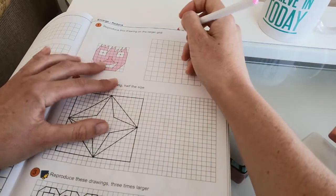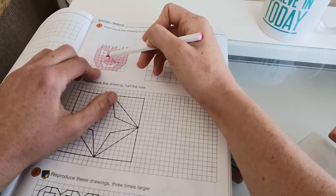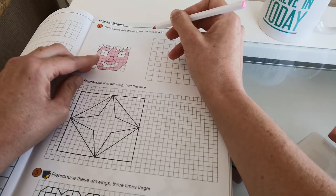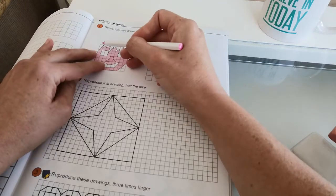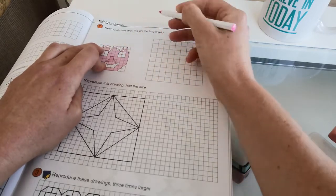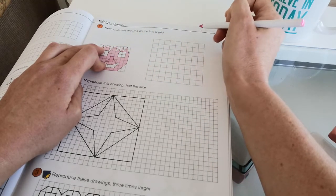Okay boys and girls, so we're going to reproduce this drawing on the larger grid. This is okay because each square in the smaller drawing just needs to be reproduced on the bigger grid.